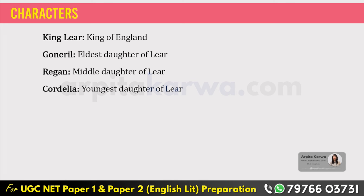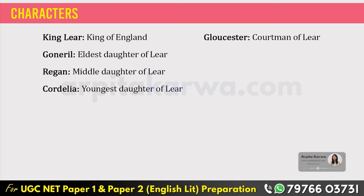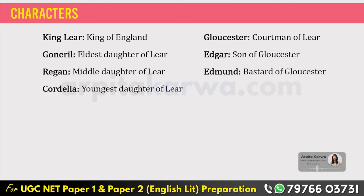The next character is called Gloucester. He is a courtman of King Lear and helps him with all the decisions. His nature is also the same as King Lear. He also has two sons and fails to identify who loves him truly. One of his sons is called Edgar and the other one is called Edmund. Edmund is called a bastard because he is born out of wedlock, meaning Edmund's mother is not Gloucester's wife.